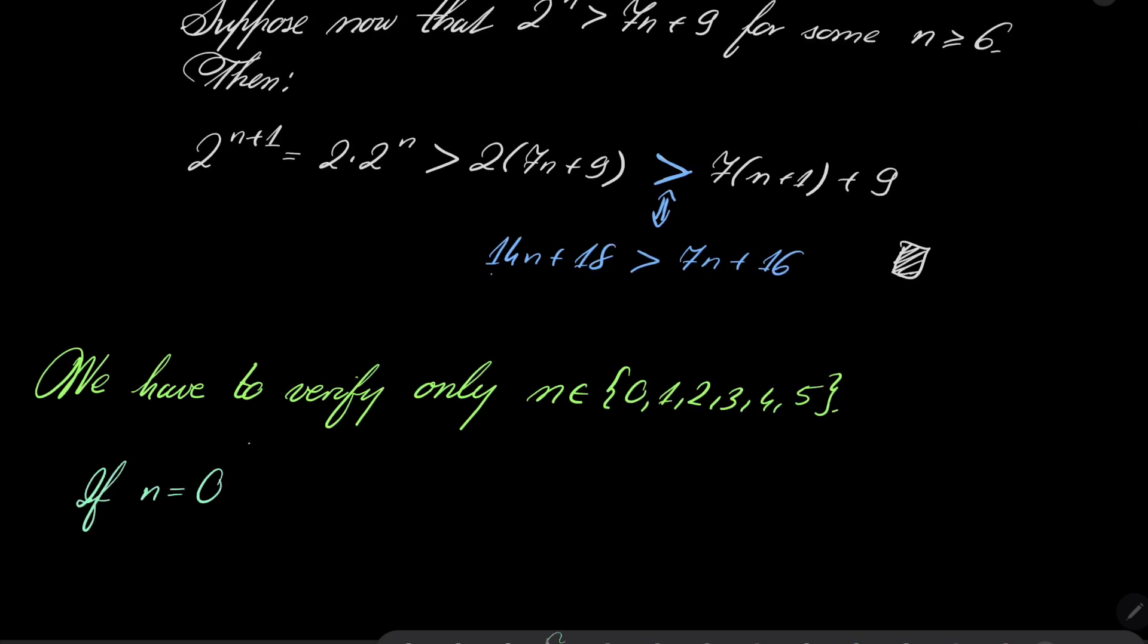If n equals 0, then 2 to the power of n equals 1, and 5 to the power of n is also 1. 1 equals 1. So we have one solution already.